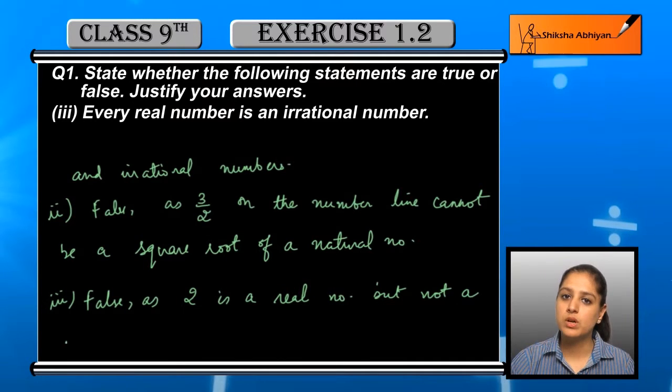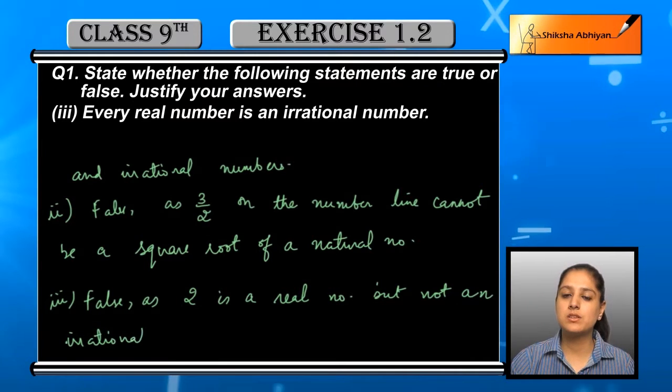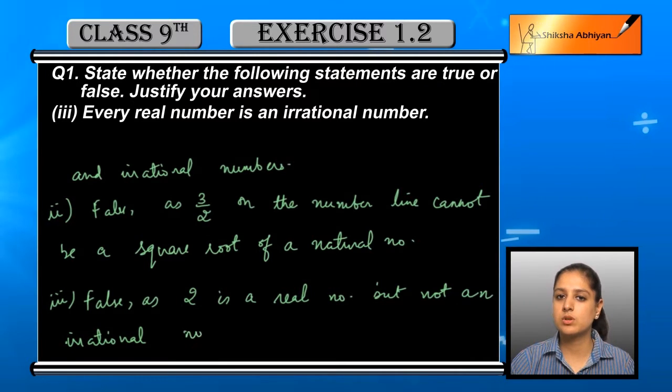For example, an integer is a real number but not an irrational number, so the statement is false.